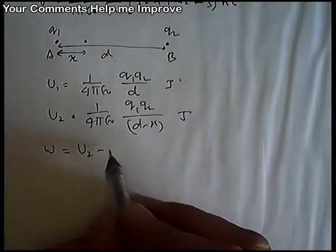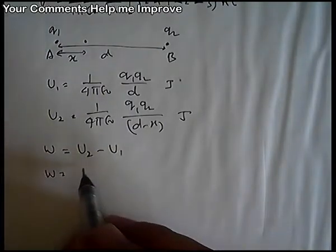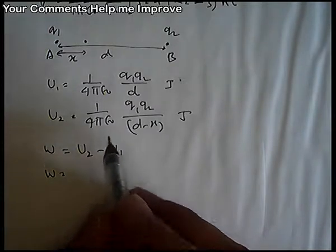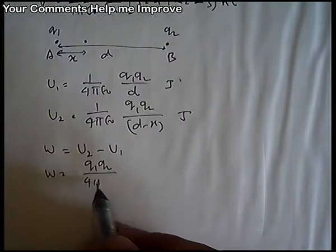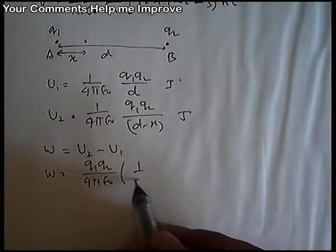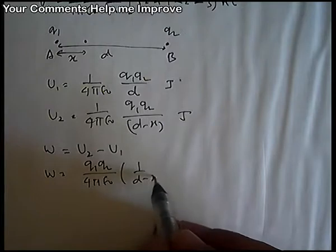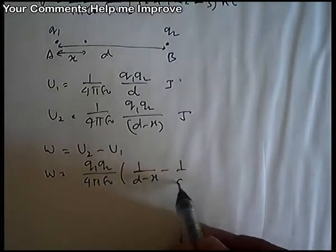Final potential energy minus initial potential energy. Final potential energy, initial potential energy: Q1, Q2 upon 4 pi epsilon naught common, 1 by d minus x minus 1 by d.